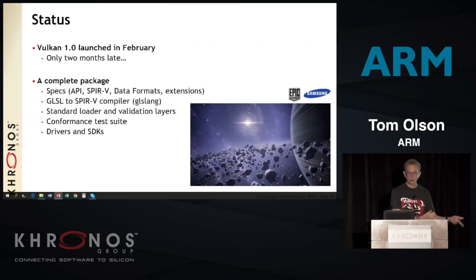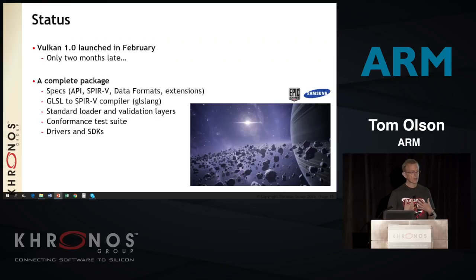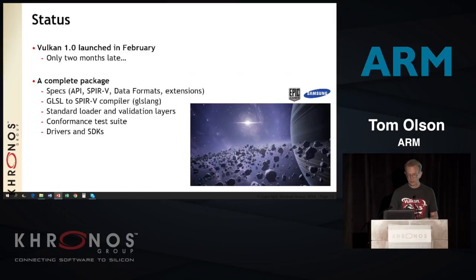Not only specifications for Vulkan itself and SPIR-V, but GLSLang was pretty mature — it could generate correct SPIR-V from HLSL programs. We had a significant SDK with validation, which is very important in Vulkan since the core API does no error checking. The conformance test was ready and we were able to accept and demonstrate conformance. And from our IHV members, there were drivers. So things were ready to go the day of launch.